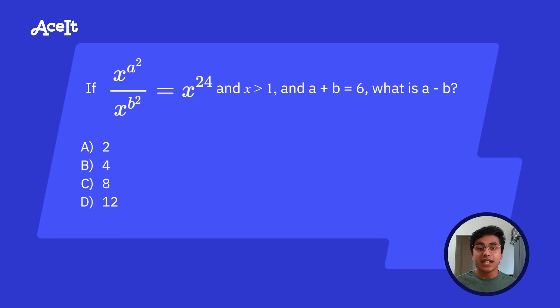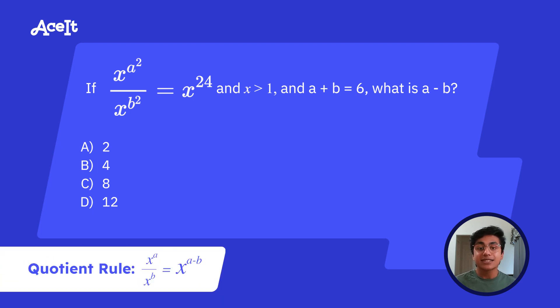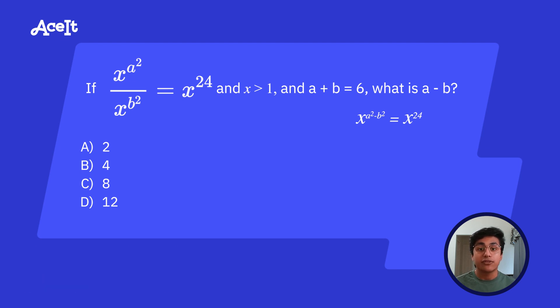So what we're going to do here first is see if we can mess around with that original expression and change it into something else. So using the quotient rule, we can achieve x to the a squared minus b squared. And we have that set equal to x to the 24. From here, since we have the same base of x all across the equation, we can cancel out the x's and be left with a squared minus b squared equal to 24.